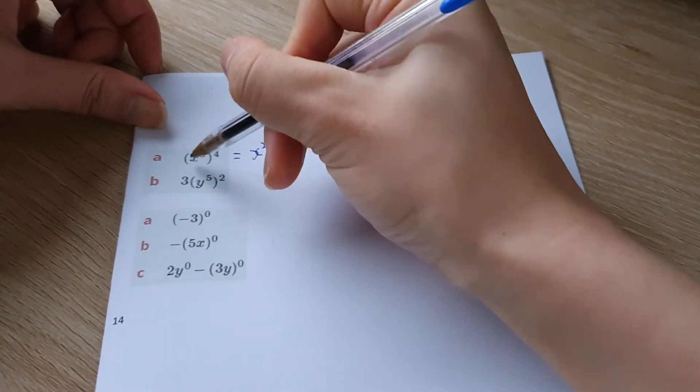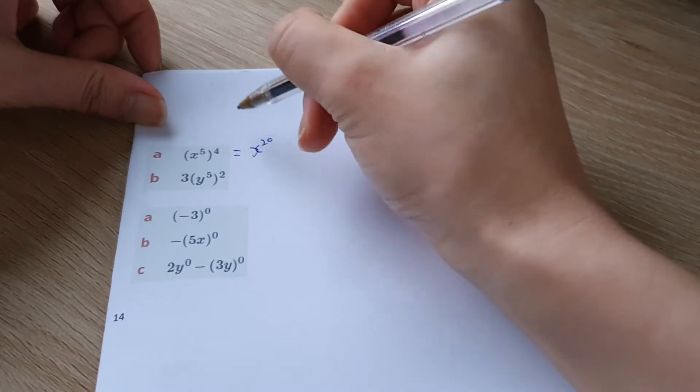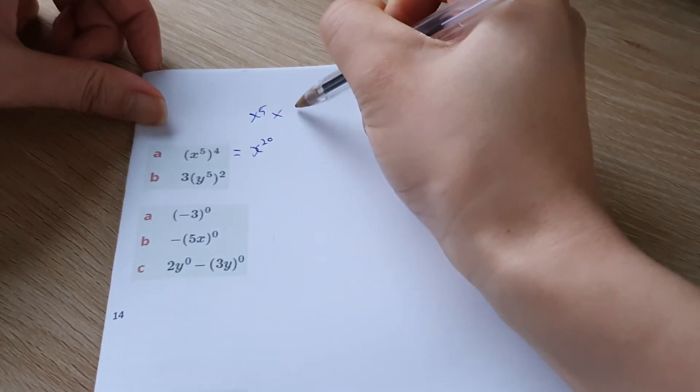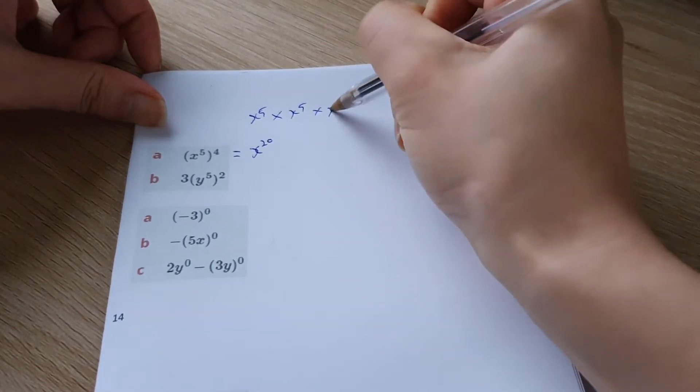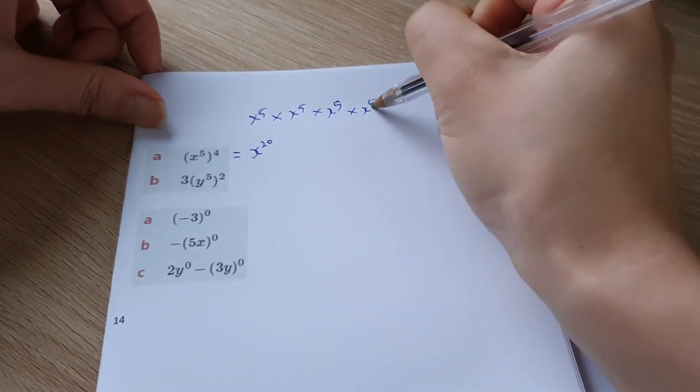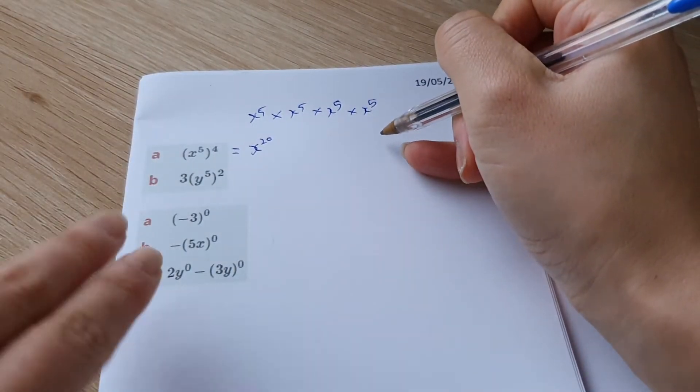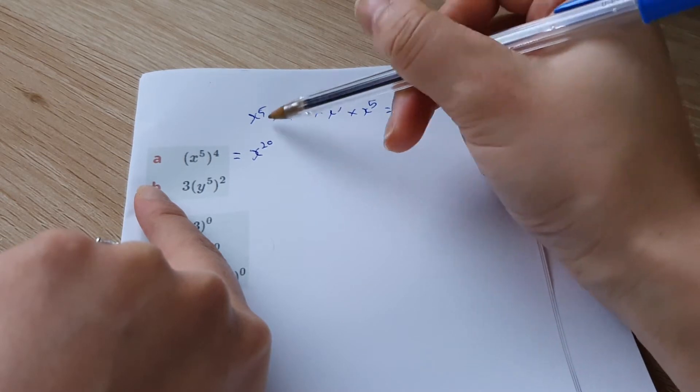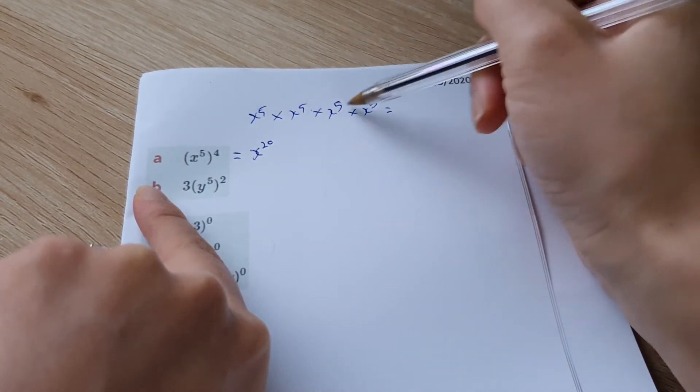Why is that? That's because when we say x to the power of five raised to the power of four, it's x to the power of five multiplied by x to the power of five and we do this four times. And remember, if you remember the first index law, we say that if you multiply indices with the same base, all you do is add their powers.